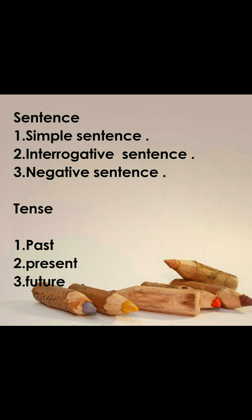After sentences, we talk about tense. Tenses are also of three types: past tense, present tense, and future tense. Past tense refers to whatever happened in previous days or months. Present tense is the current time. Future tense refers to whatever will happen in the next day, next month, or next moment.